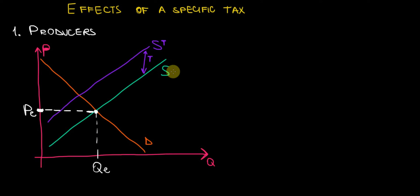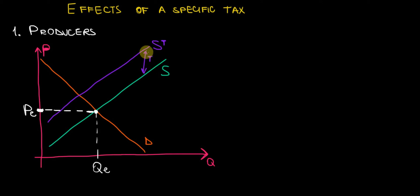The purple curve is going to be the supply after a specific tax. Remember from the previous video that a specific tax shifts the supply curve up by the amount of that tax — the difference between these two curves is the amount of that tax. As always, we have an original equilibrium noted by this white dot, so quantity in equilibrium and price in equilibrium.